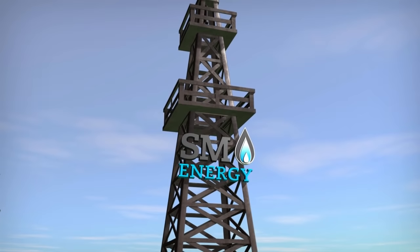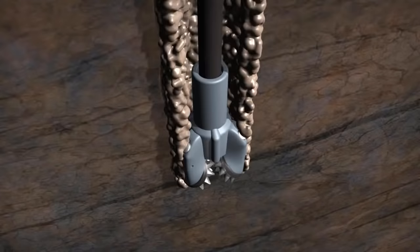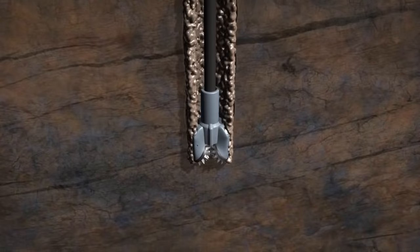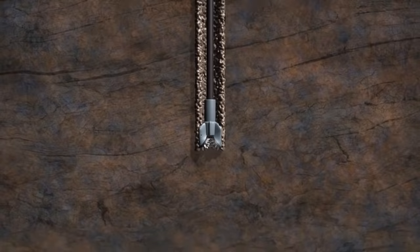Once a reservoir has been identified, a surface hole is drilled down below all freshwater aquifers. Since hydrocarbon-rich reservoirs are typically a mile or more below the surface, they're well below all freshwater aquifers, which are usually no more than 1,000 feet below the surface.